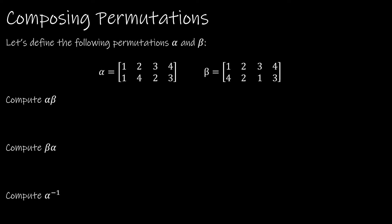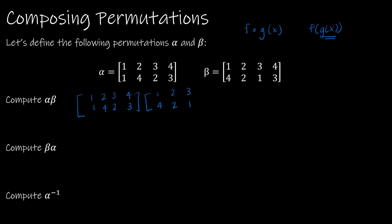Now let's take a look at how to compose permutations. Composition is the function operation that we will use, especially in the next video when we talk about permutation groups — that will be the implied operation. Think about this just as we did before when we had f(g(x)). Just as before, we would start on the right and go to the left, and that's what we're going to do here. So for alpha∘beta, you can rewrite them if you'd like, but you certainly don't have to. Alpha∘beta says write them in the correct order, but start on the right and work your way to the left to see what happens.